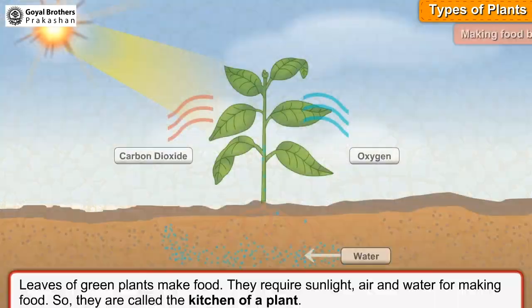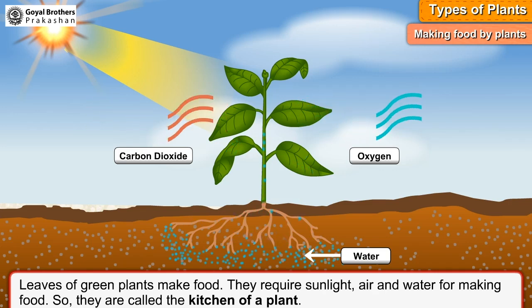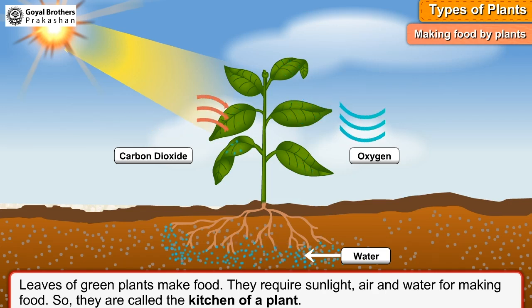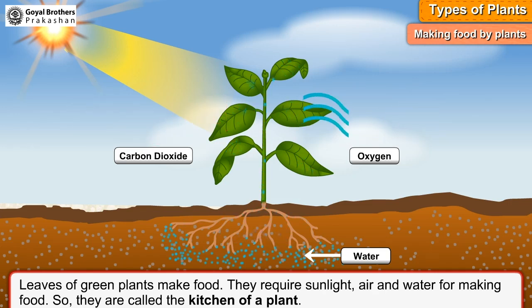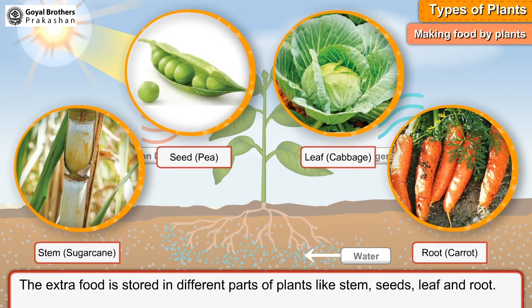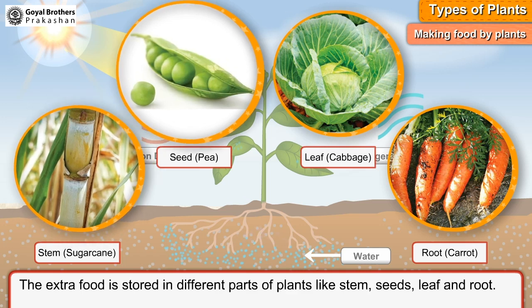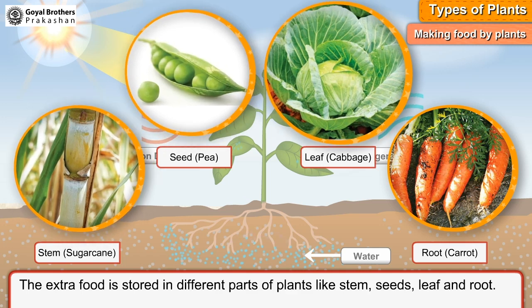Leaves of green plants make food. They require sunlight, air, and water for making food, so leaves are called the kitchen of a plant. The extra food is stored in different parts of plants, like stem, seeds, leaf, and root.